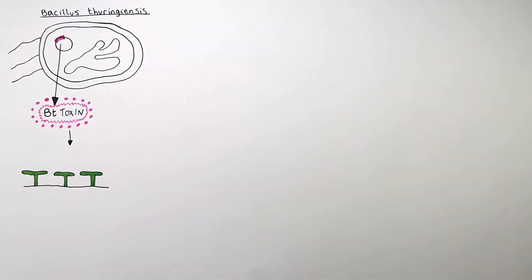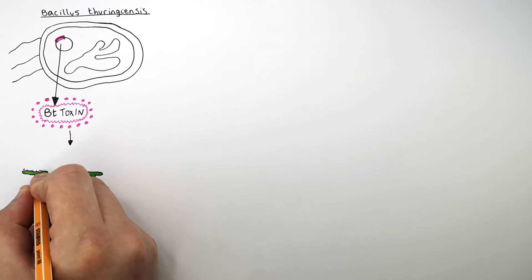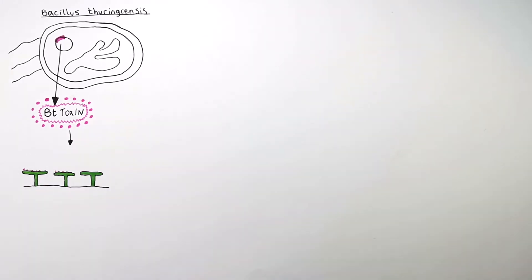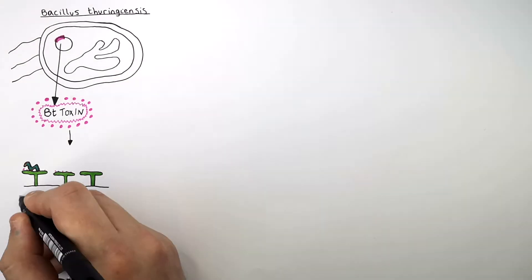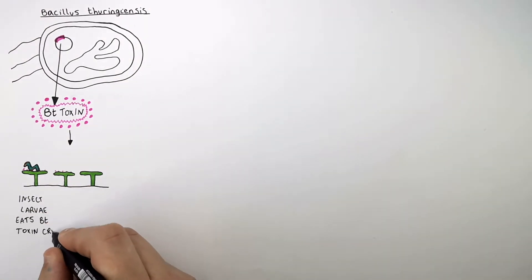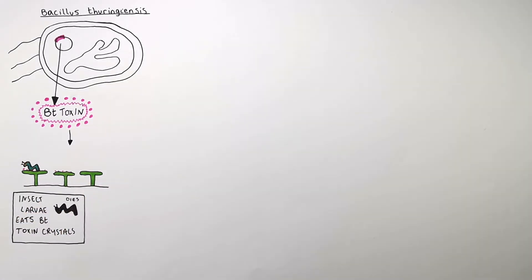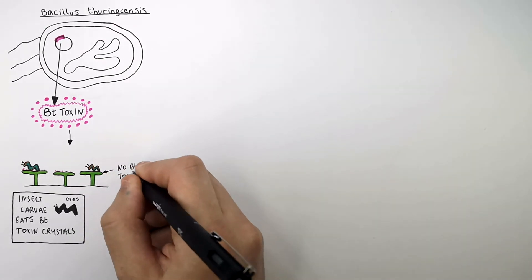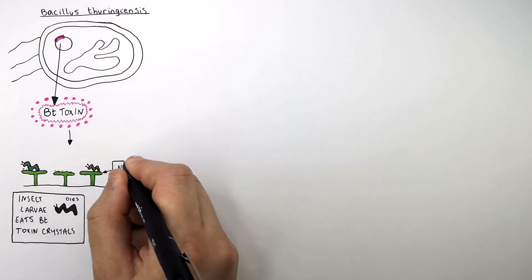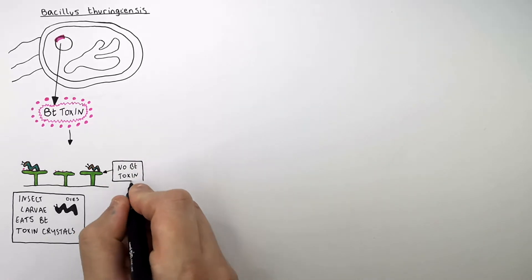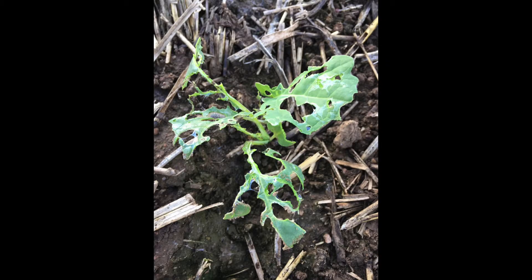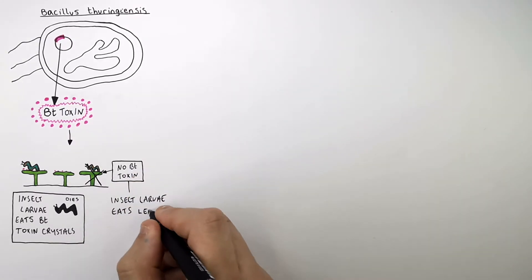The Bt Toxin was sprayed on these two plants to the left, not on the plant to the right. So insect larvae — examples of caterpillars — if these insect larvae eat the Bt Toxin crystals, they're going to die. This here is a dead insect larva. In this plant there is no Bt Toxin, meaning the caterpillar will not die if it eats this plant. Insect larvae can eat these leaves without dying, which will reduce the crops that the farmer produces.